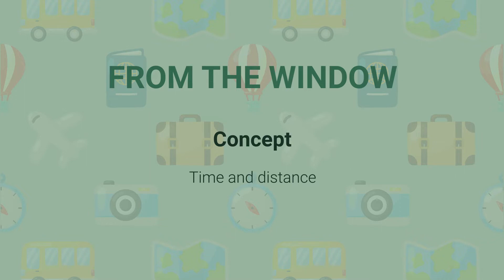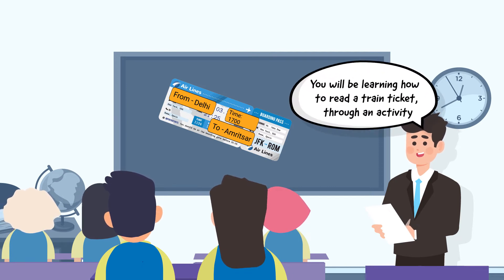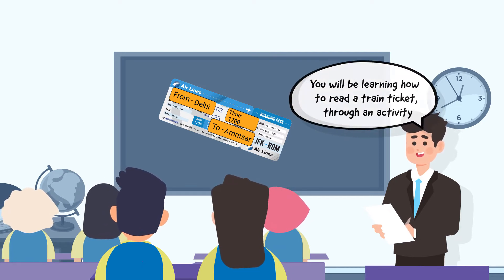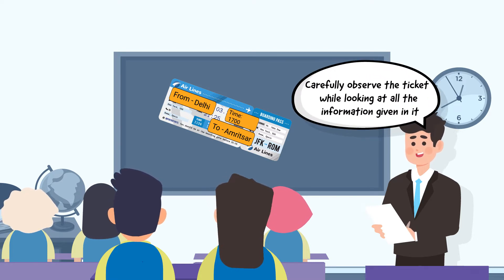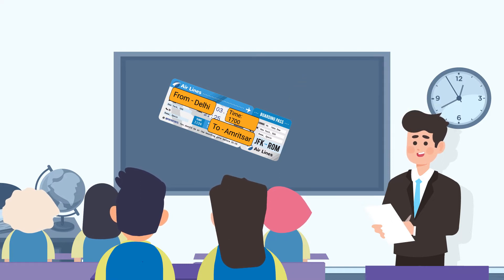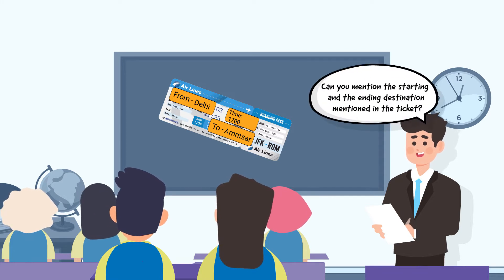Using the tickets they have bought, inform the students that they will be learning how to read a train ticket through an activity. To begin, ask the students to carefully observe the ticket and look at the information given in it, then initiate a discussion based on their observations.